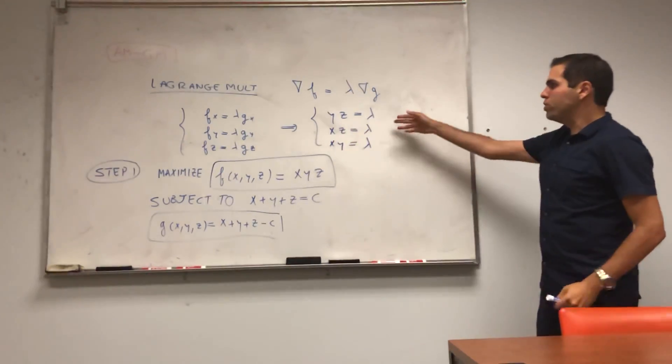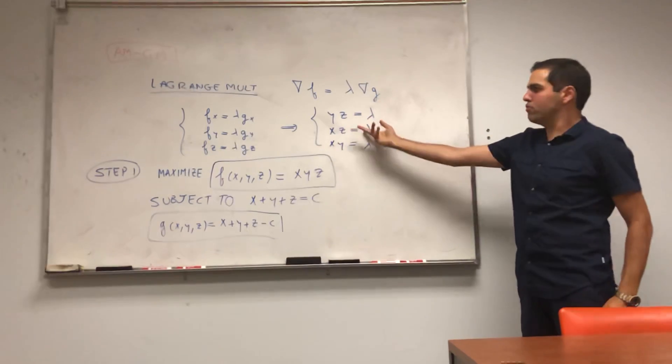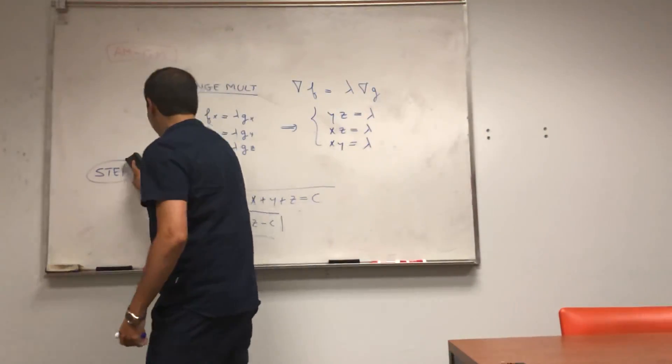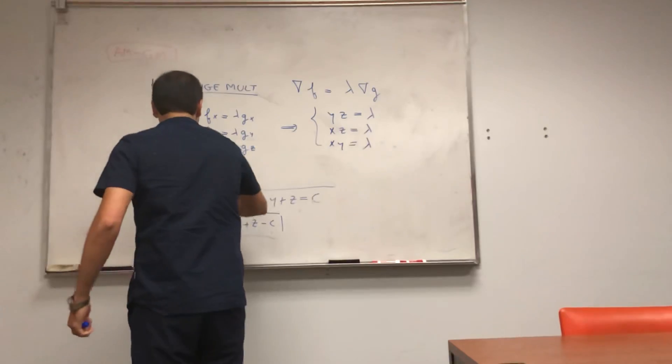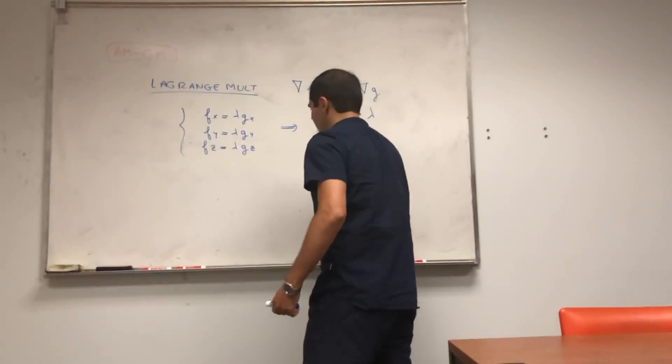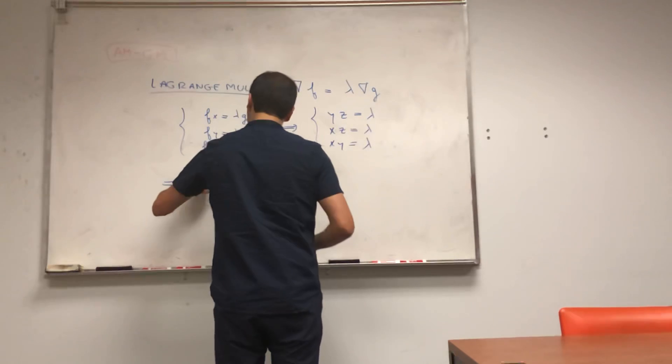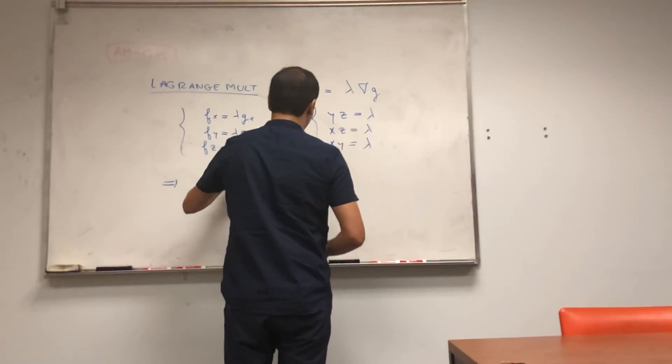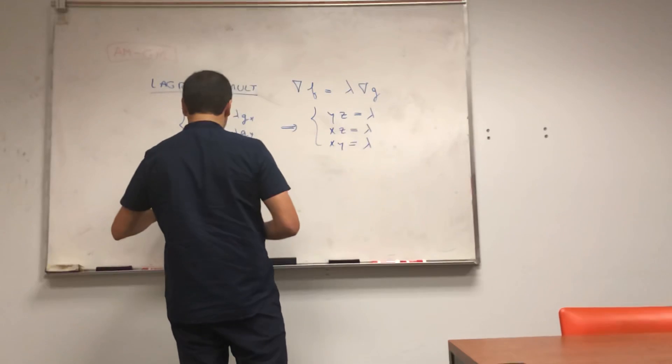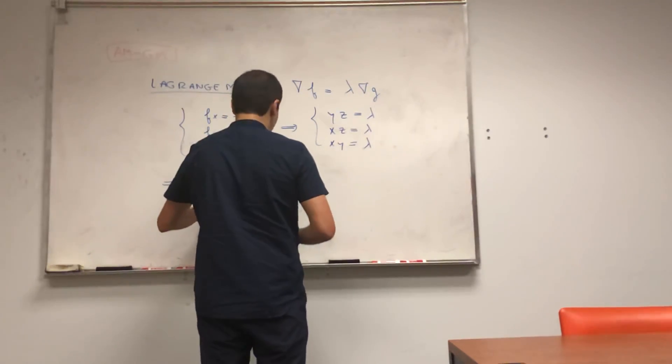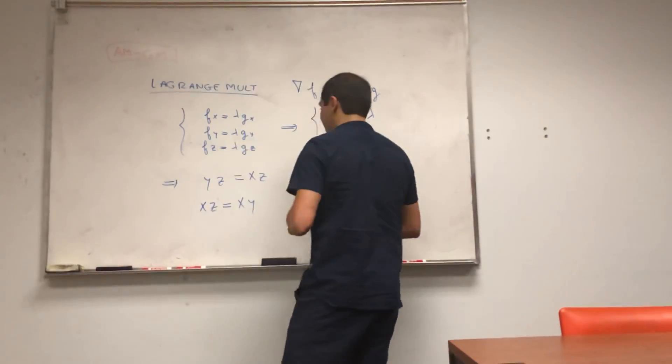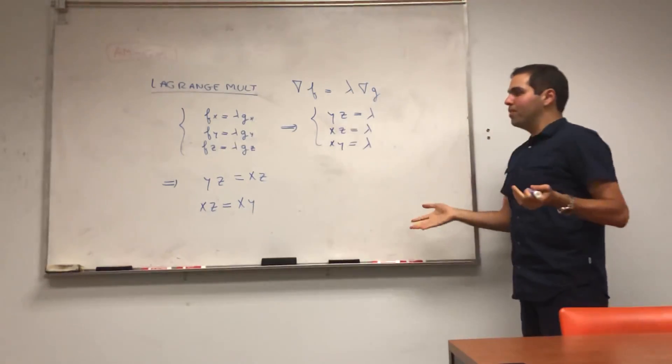So what we get is that all those three quantities are equal to lambda. So in particular, they're equal to themselves. So what we really get is that yz equals to xz, and for example, xz equals to xy.